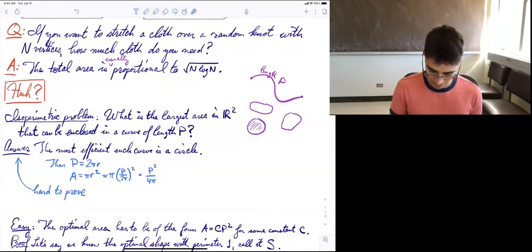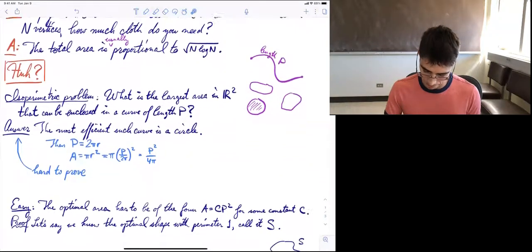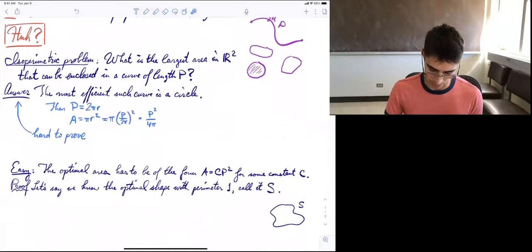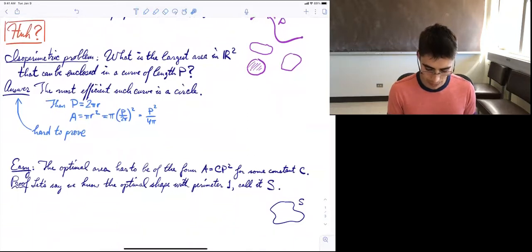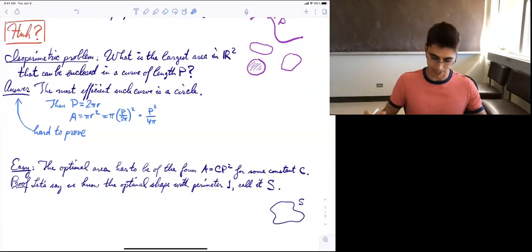So there are two parts to this formula: there's the one over 4π, and there's the p². And I want to argue that the p² is actually really easy to see. It's easy to see that the optimal area, the largest area enclosed in a curve of length p, has to be of the form cp² for some constant.